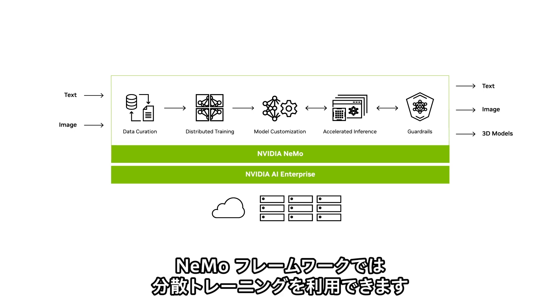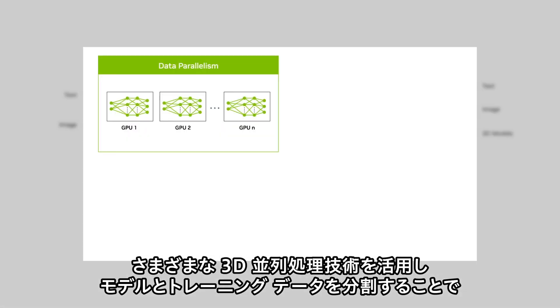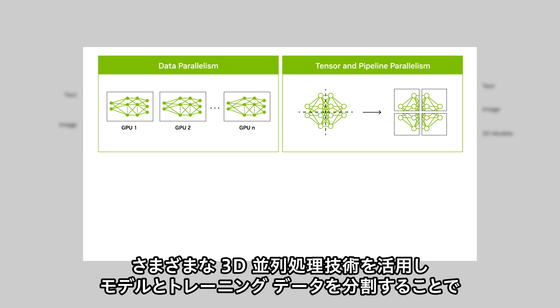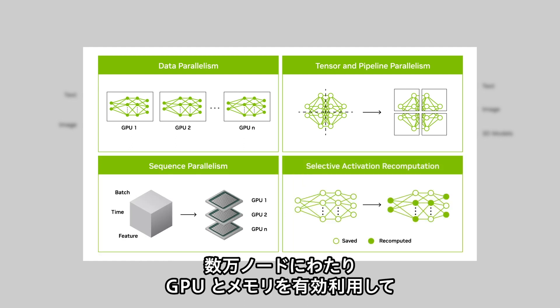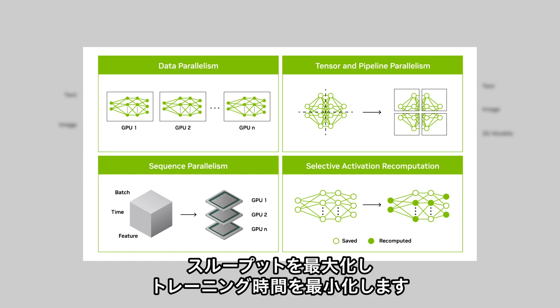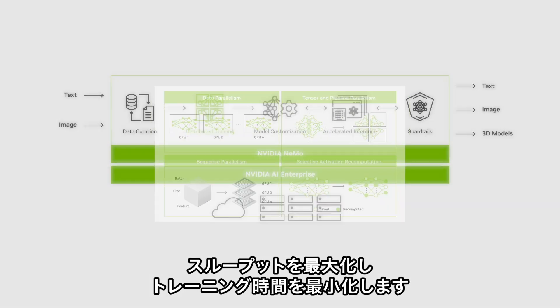The NEMO Framework takes advantage of distributed training. It uses various 3D parallelism techniques to efficiently utilize GPUs and memory across tens of thousands of nodes by splitting the model and the training data. This maximizes throughput and minimizes training time.